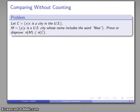Well, let's see if we can do anything with this. Well, let's take a look at a problem here. We'll take C being the set of things where what I'm talking about is a city in the United States, M being a set of things where what I'm talking about is a US city whose name includes the word new. And let's see if we can prove or disprove the cardinality of M is less than or equal to the cardinality of C. Now that's a prove or disprove. I'm not yet committing myself to whether this is actually a true statement or not.